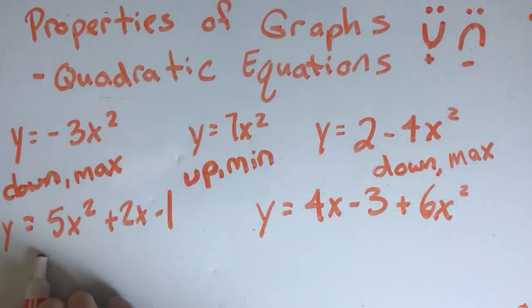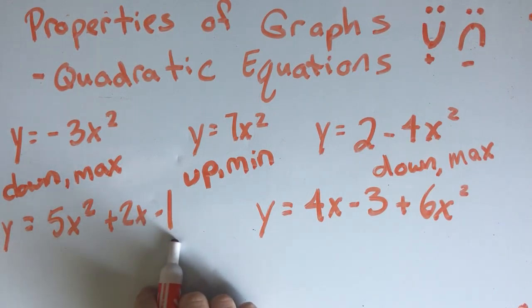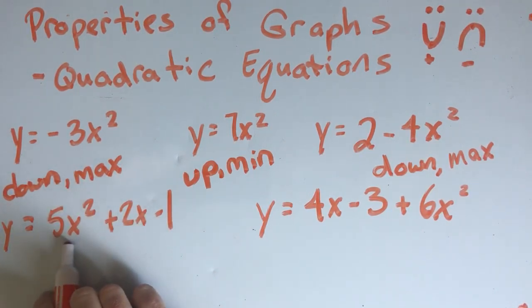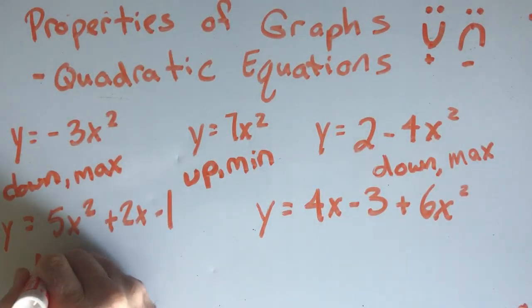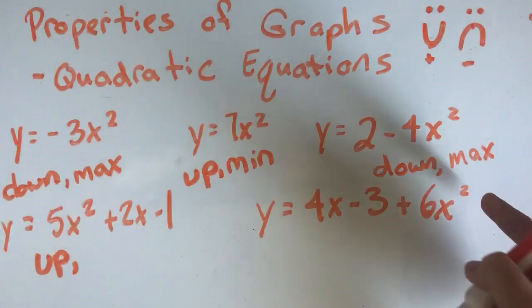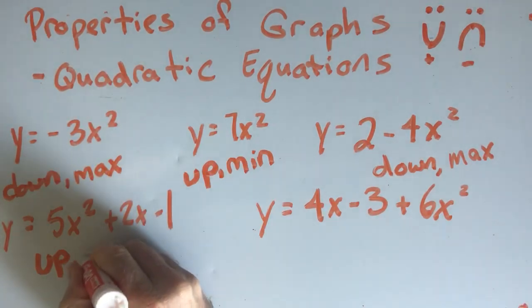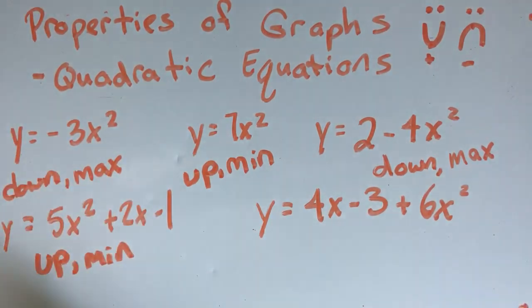Let's go down here. Here, I have y equals 5x squared plus 2x minus 1. We find the x squared. There's the x squared right there. What number is in front of the x squared? That is a 5. It is a positive 5. Positive. It opens up. And up always has a minimum.